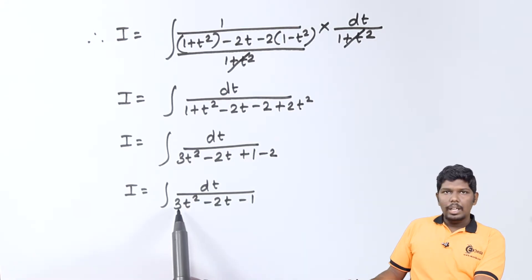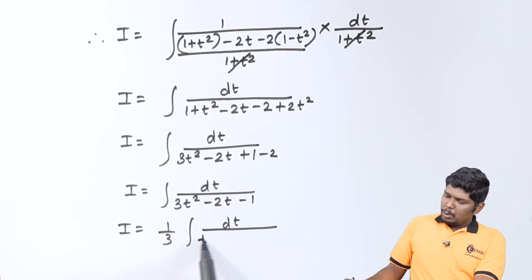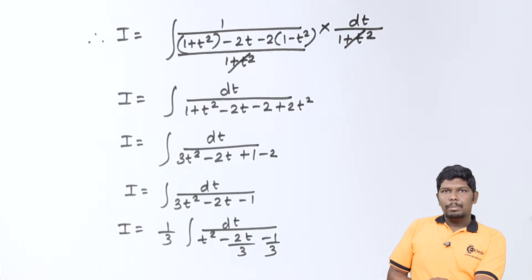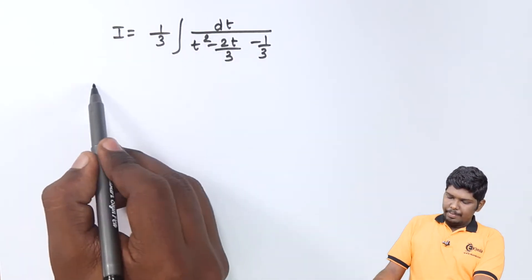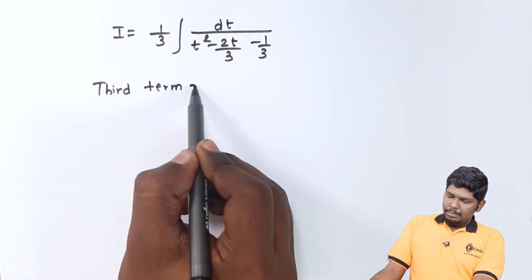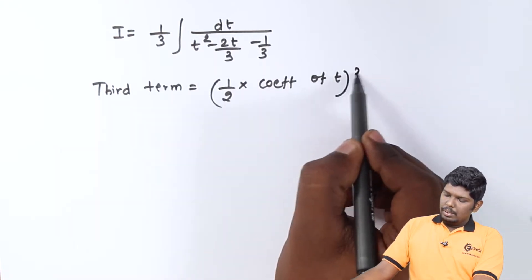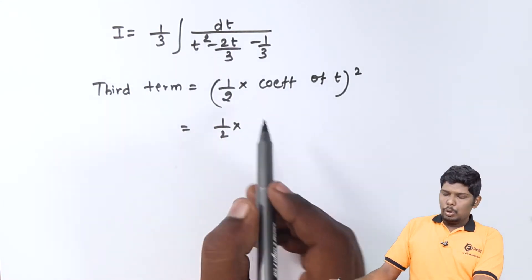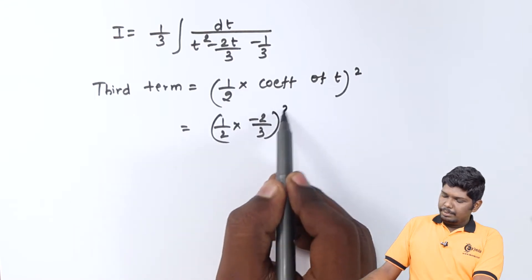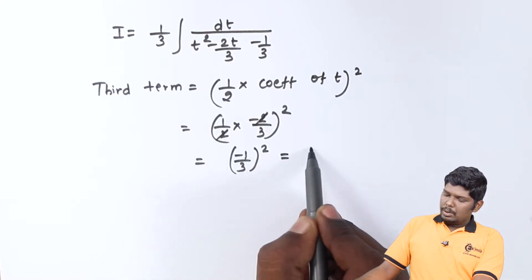The next step is we will take 3 common. That will give you (1/3) integral dt upon (t² minus 2t/3 minus 1/3). Now let us find the third term. The third term equals half of the coefficient of t, the whole squared. The coefficient of t is minus 2/3, so half of that is minus 1/3, and its square is plus 1/9.